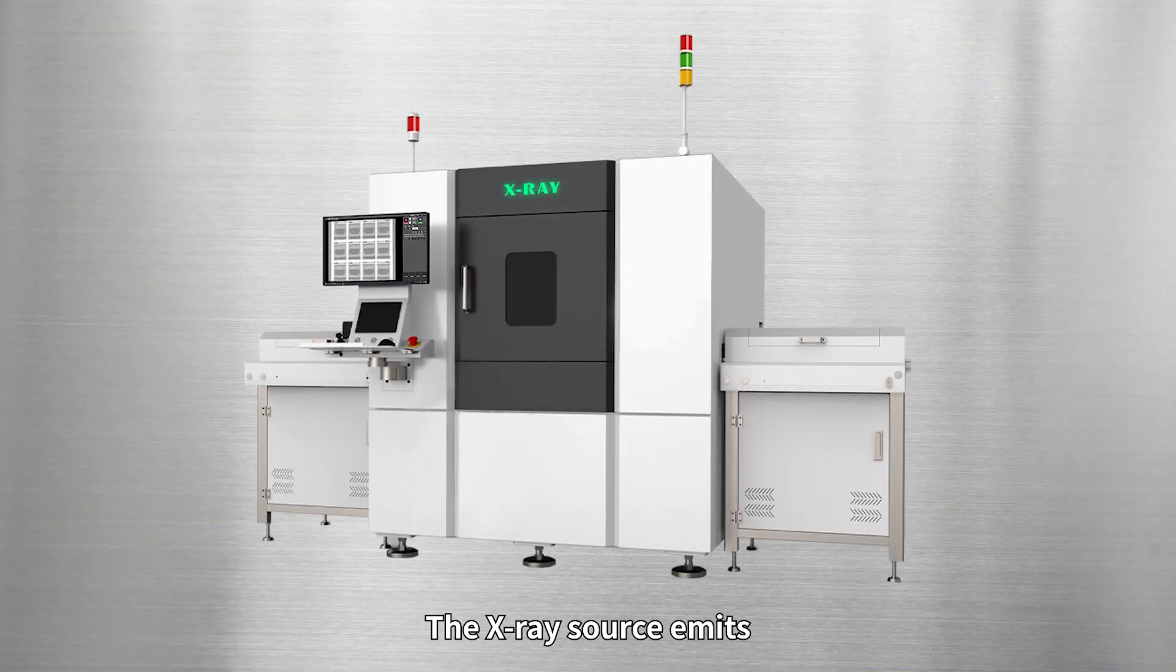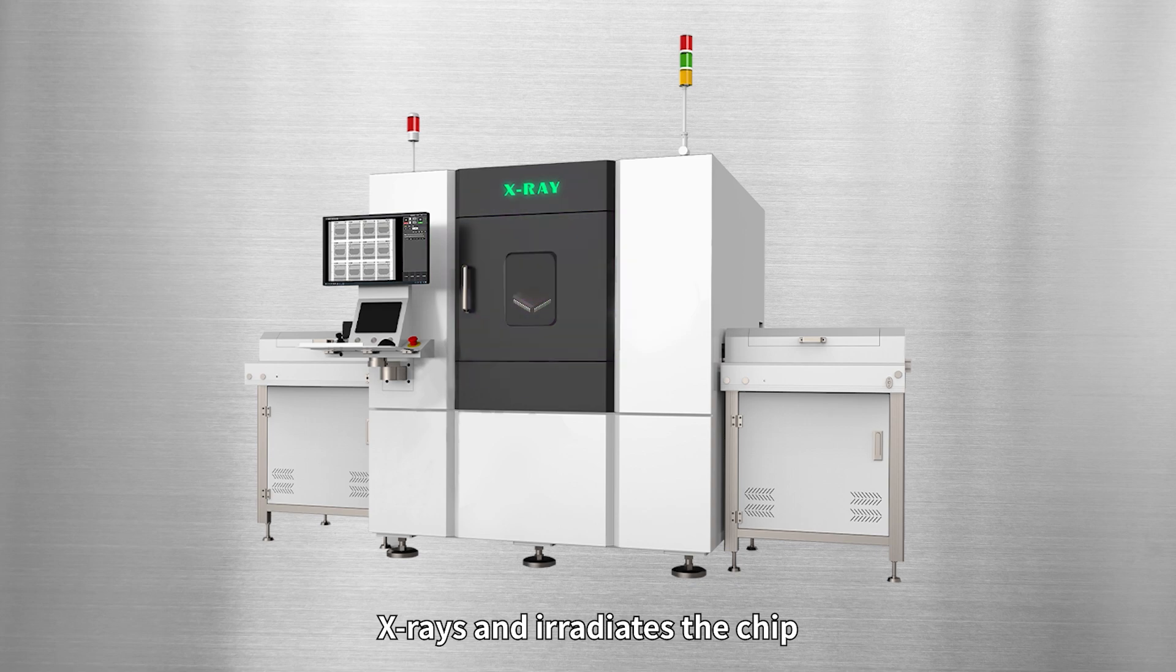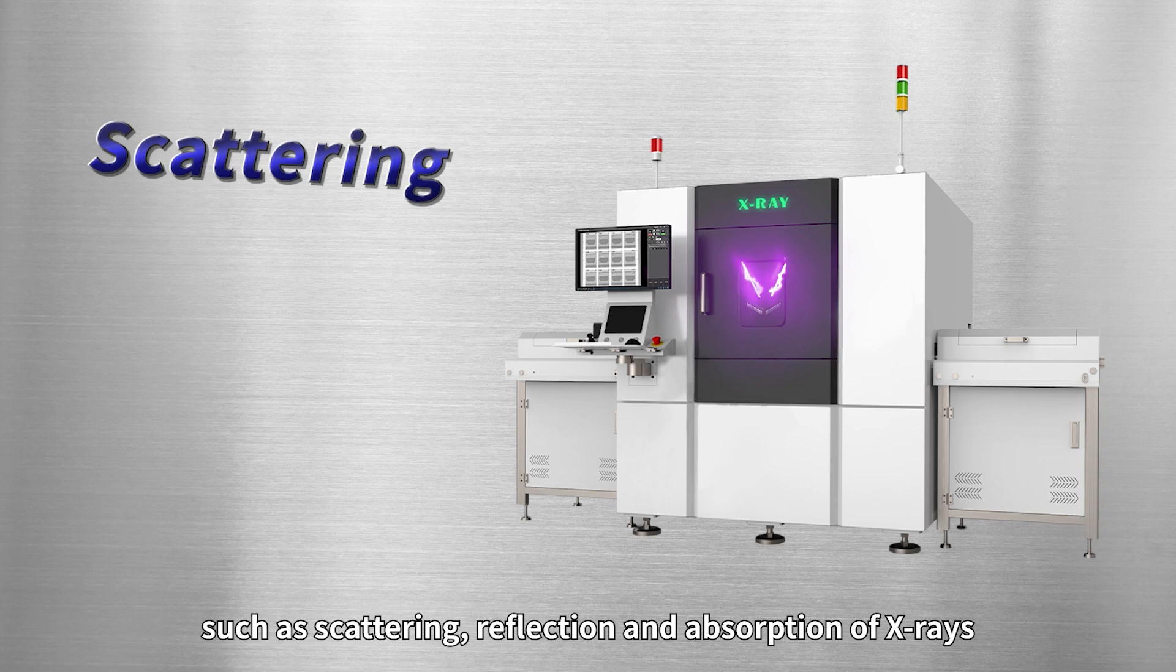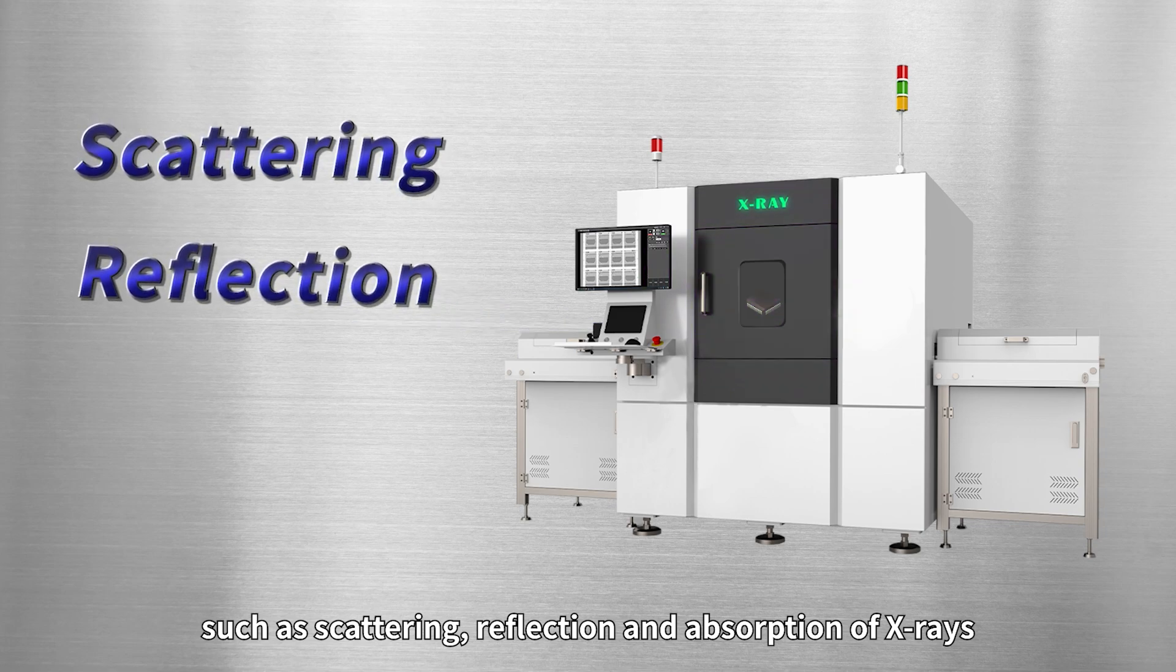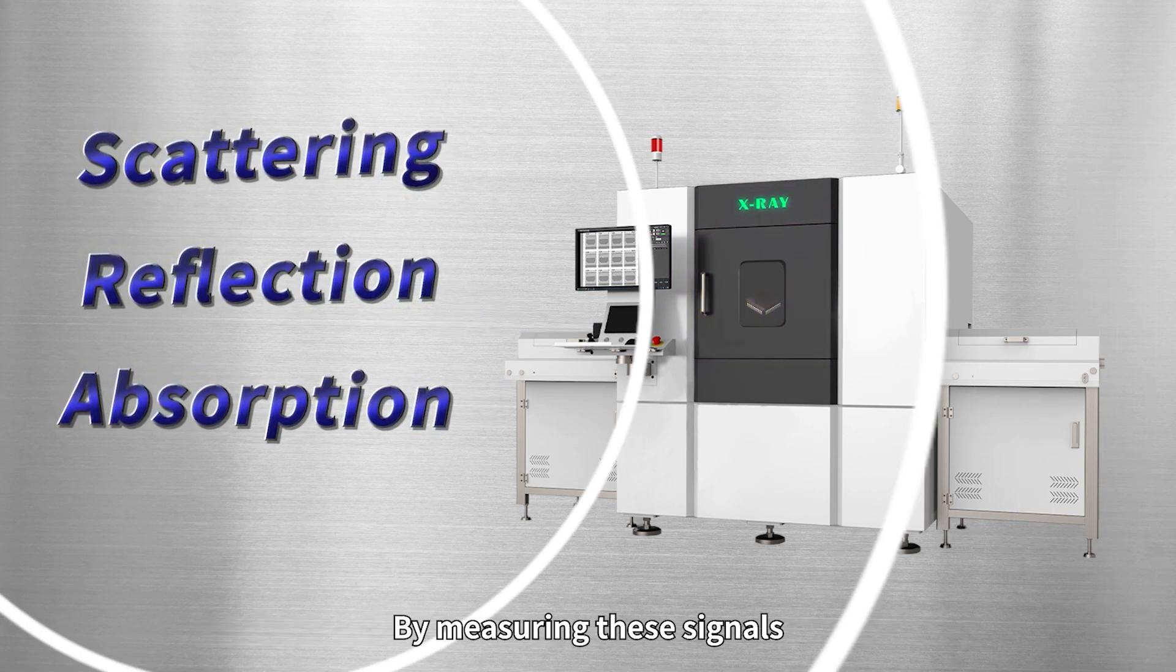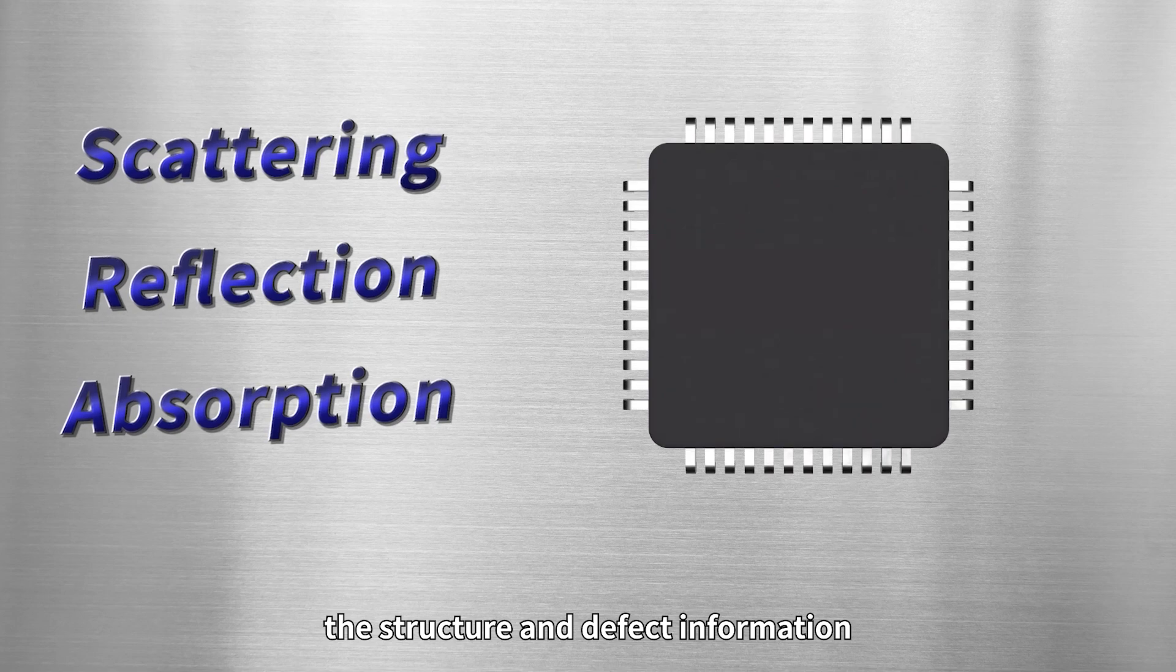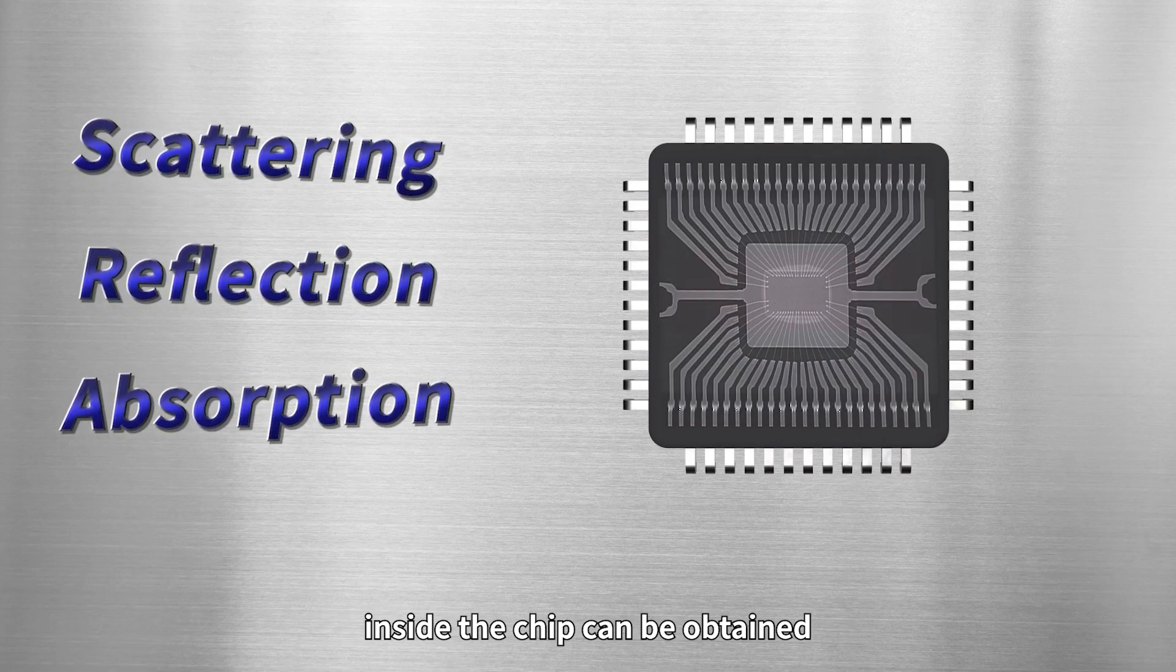The X-ray source emits X-rays and irradiates the chip. Different materials in the chip have different signals such as scattering, refraction, and absorption of X-rays. By measuring these signals, the structure and defect information inside the chip can be obtained.